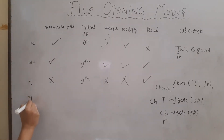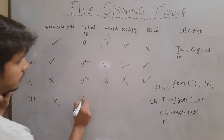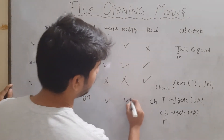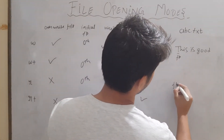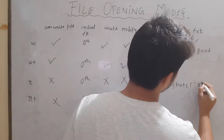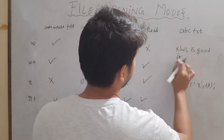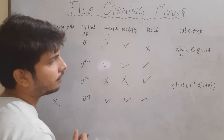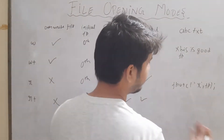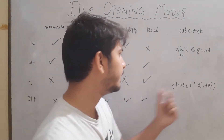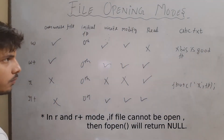Then we have 'r+' mode, which is similar to 'r' mode except that write and modify operations are allowed. So if I am at the start of the file and write fputc with fp, the character will be replaced and the file pointer will increment. Note that we can also use fputs and fgets functions to write and retrieve data.